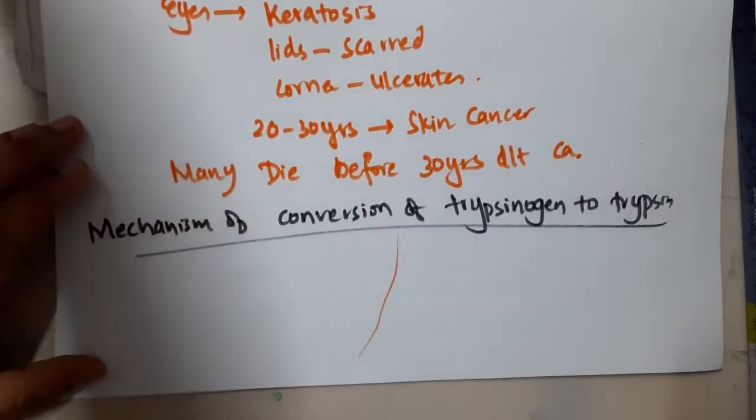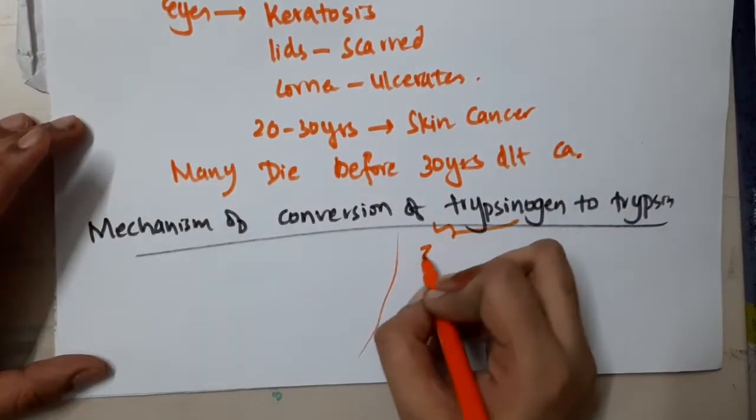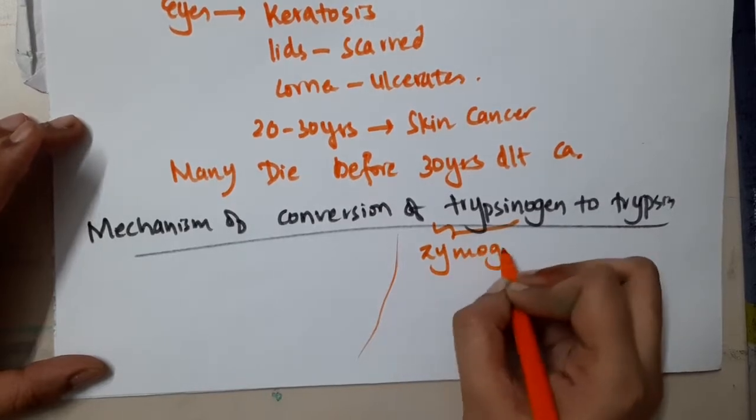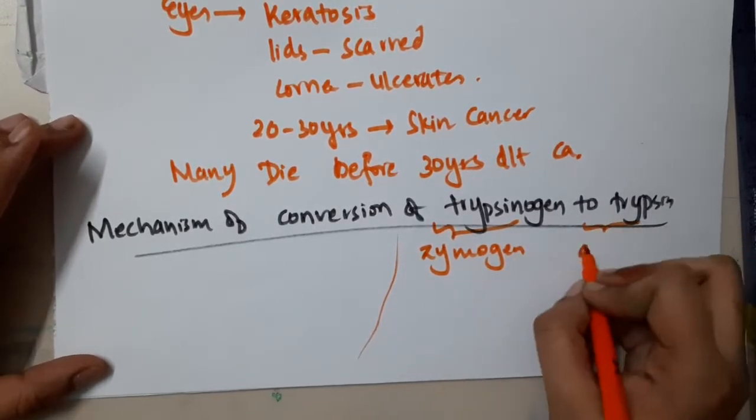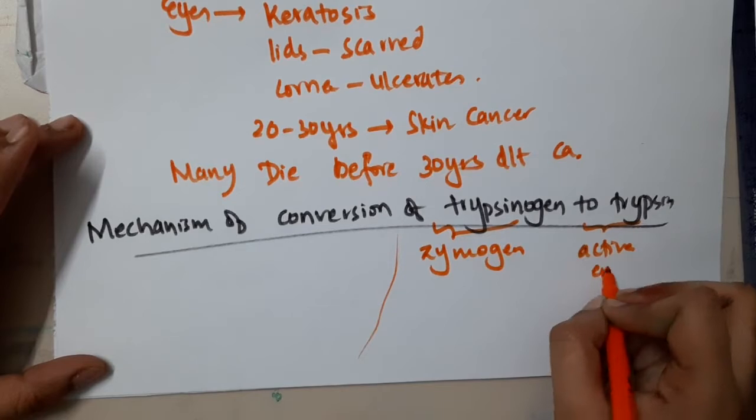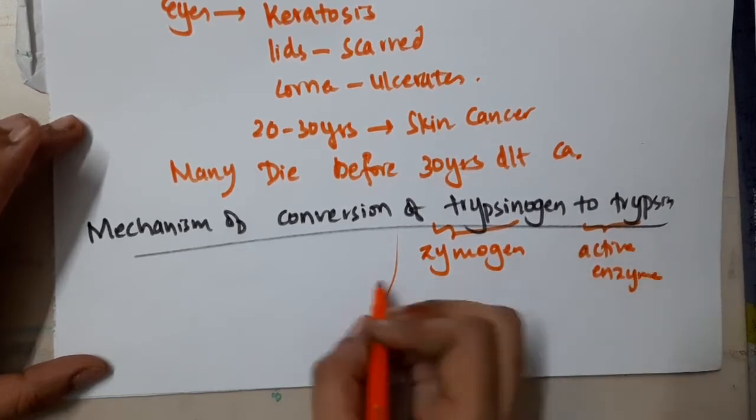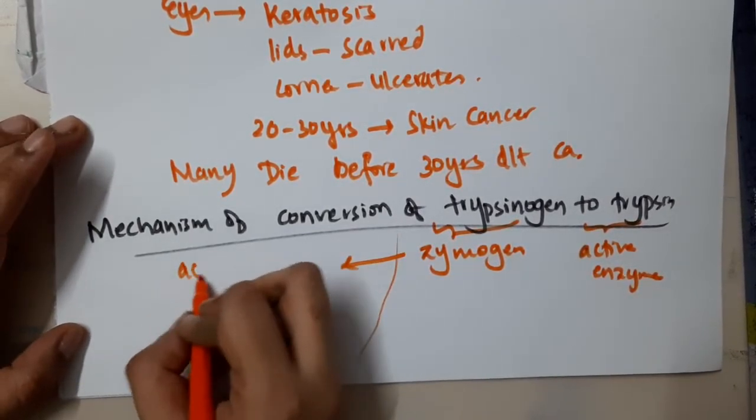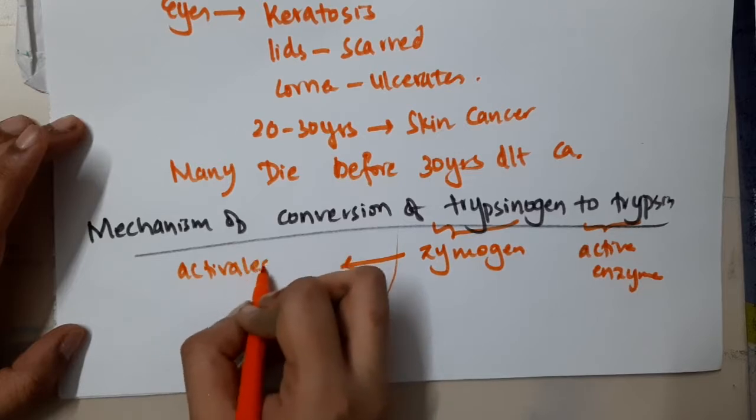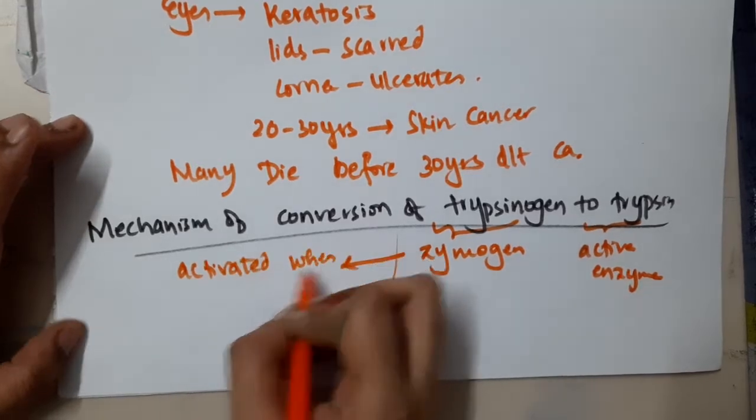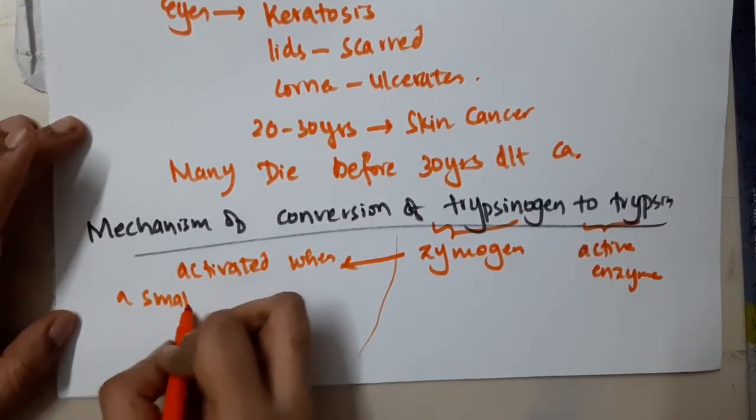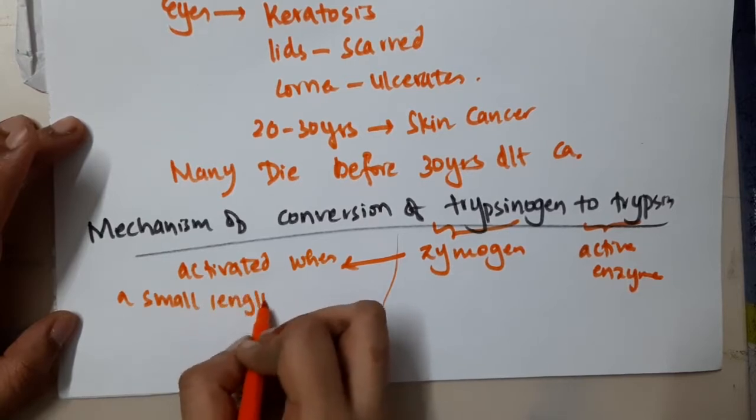Trypsinogen is actually a zymogen. Trypsin is an active enzyme. This zymogen is activated when a small length of the protein is cleaved off from the end of the molecule.